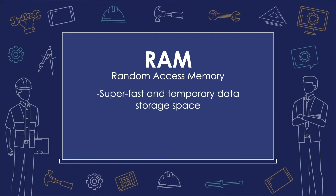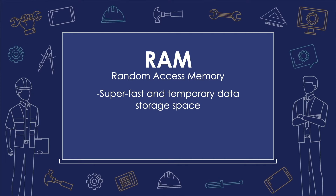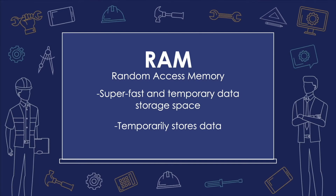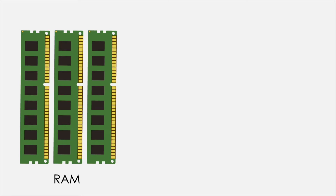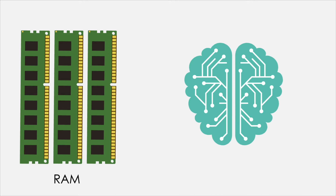RAM is the super-fast and temporary data storage space that a computer needs to access right now or in the next few moments. RAM temporarily stores data and goes away when the power is turned off. It is very fast, which makes it ideal for things that a computer is actively working on — such as applications currently running, for example the web browsers in which you are reading a blog or an article, and the data those applications work with.